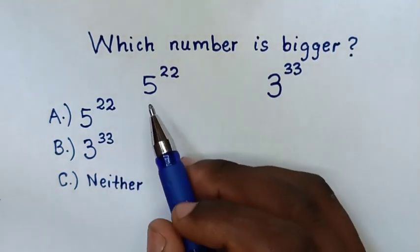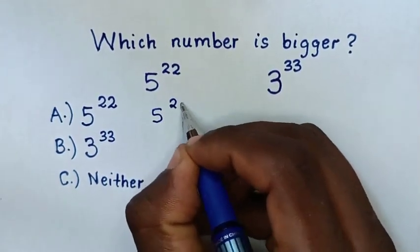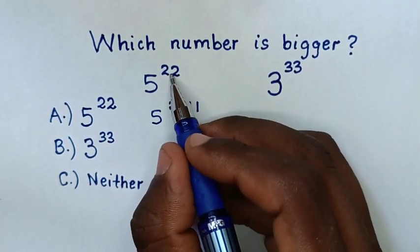So, from 5 to the power of 22, we can rewrite it as 5 to the power of 2 times 11, because 2 times 11 is 22.